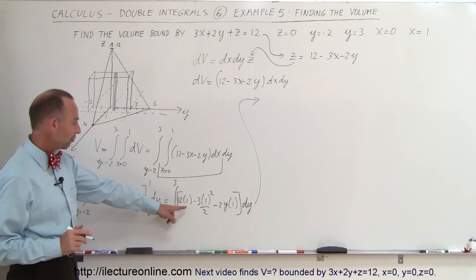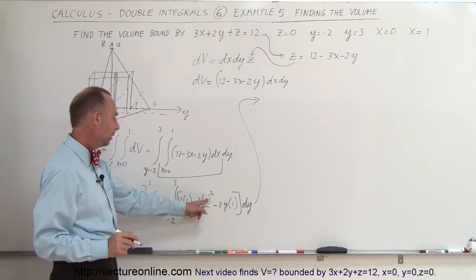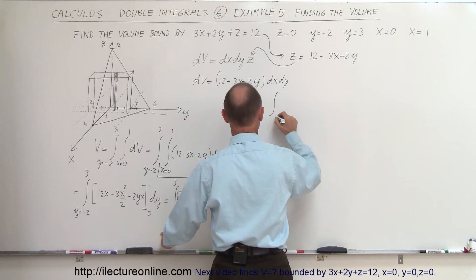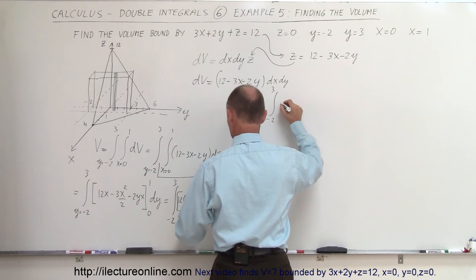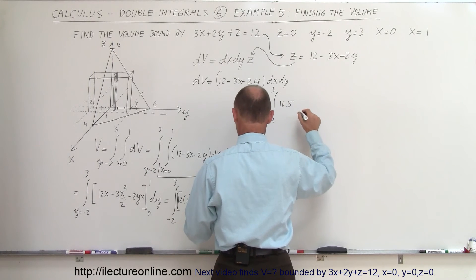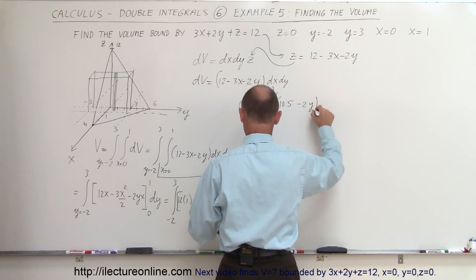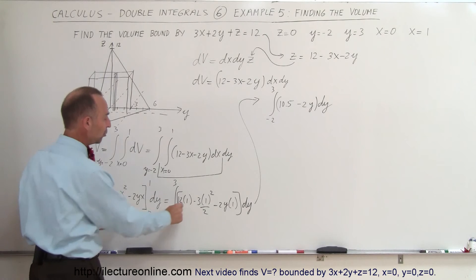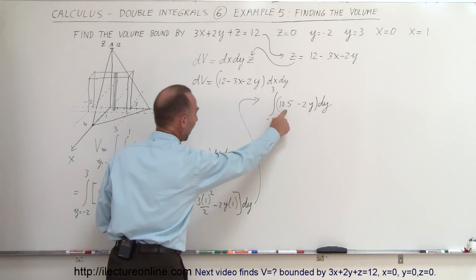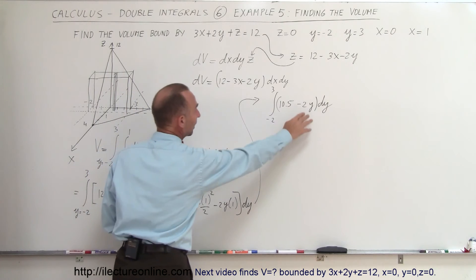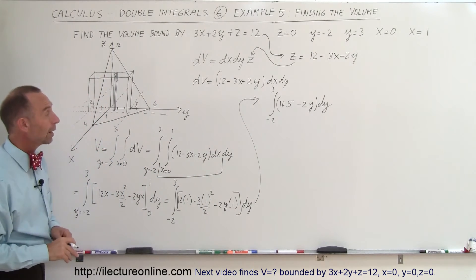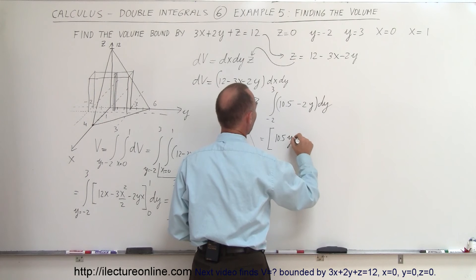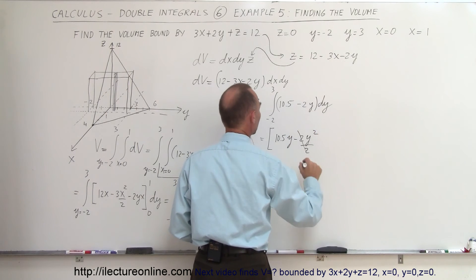Cleaning that up: 12 minus 3/2 equals 10.5. So we have the integral from negative 2 to 3 of (10.5 minus 2y) DY. Integrating gives 10.5y minus y squared, evaluated from negative 2 to 3.